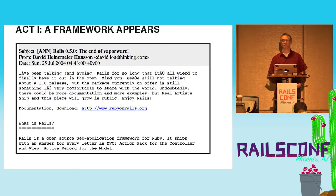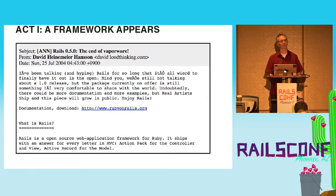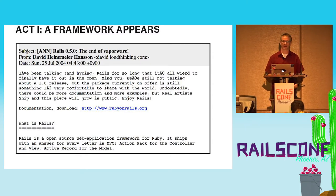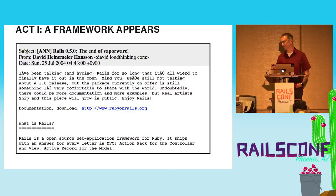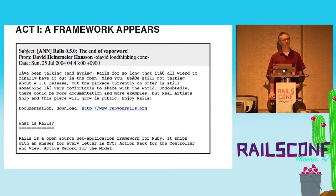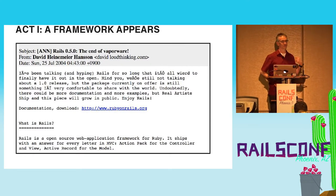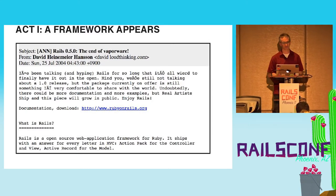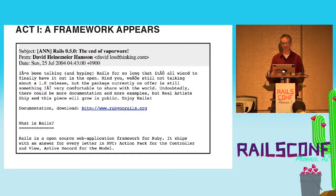I'm going to go through the history in four acts. The first is with the appearance of Rails. This was the original announcement to the Ruby Lang mailing list about Rails 0.5.0 — that this thing David had been talking about was actually out there and people could look at it. Remember, this is before RubyGems was a thing, before GitHub was a thing — just throwing a library out there and seeing who would grab onto it. This is July of 2004.